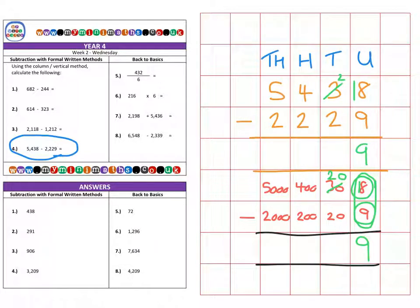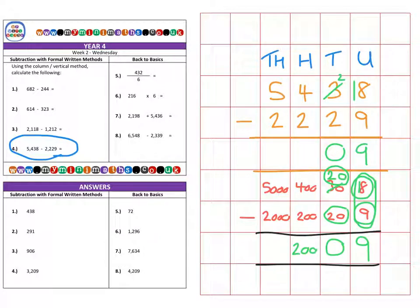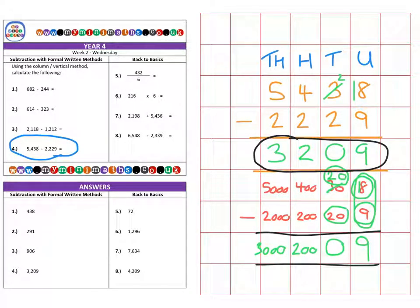Then onto the tens column we have twenty subtract twenty, leaving us with zero. Then four hundred minus two hundred in the hundreds column leaves us with two hundred. And finally five thousand minus two thousand leaves us with three thousand, for a final answer of three thousand two hundred and nine.